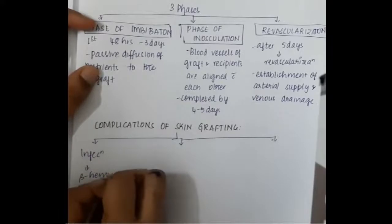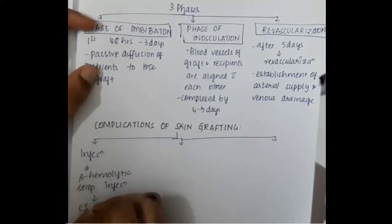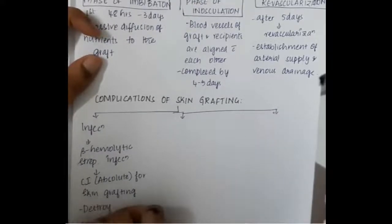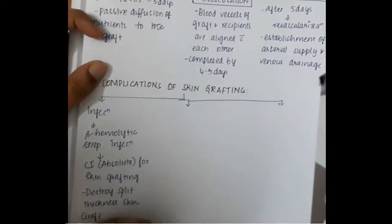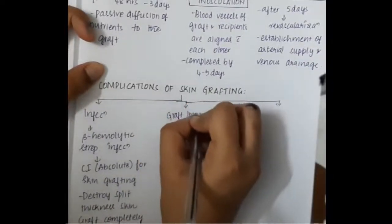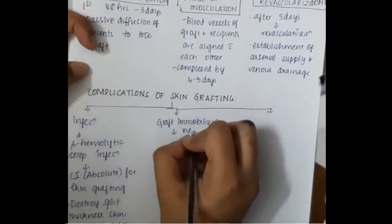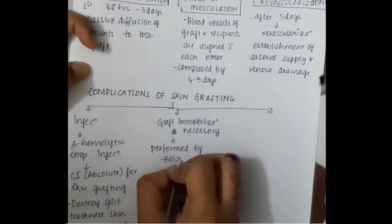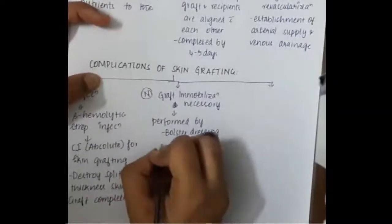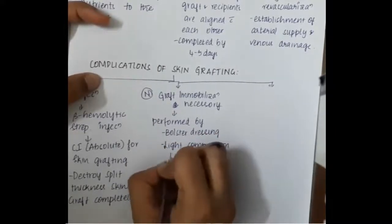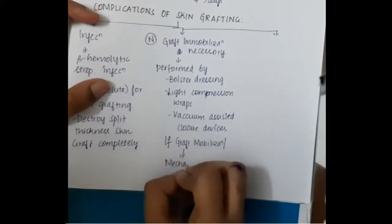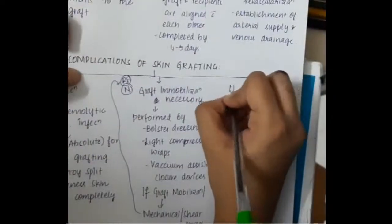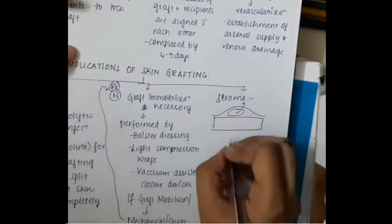The next important topic is complications of skin grafting. The important complication is infection caused by beta hemolytic streptococci. This is an absolute contraindication for skin grafting because it will completely destroy the split thickness skin graft. Graft immobilization is also necessary, done by a type of dressing called bolster dressing, light compression wraps, or vacuum-assisted closure devices. Graft mobilization increases chances of mechanical stress or shear.